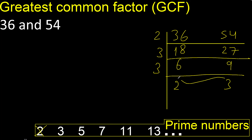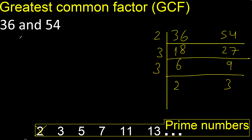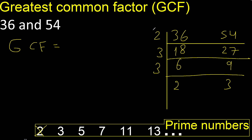Finish, because 2 and 3 cannot be divided by the same number. Therefore, finish. Multiply 2 by 3 is 6, and 6 multiplied by 3 is 18. Finish.